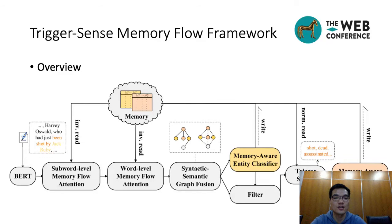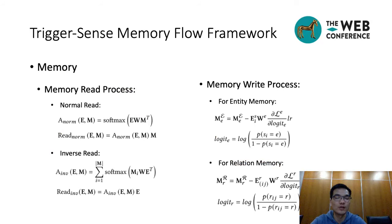Next, I'll cover five main modules of our model in detail. Memory consists of entity memory and relation memory. Each slot of them indicates an entity category and a relation category respectively. We define two types of processes: memory-read process and memory-write process to manipulate the memory. For memory-read process, we define two processes to read memory: normal-read process and inverse-read process. The normal-read process takes the input as query, the memory as key and value, while the inverse-read process takes the memory as query and the input as key and value.